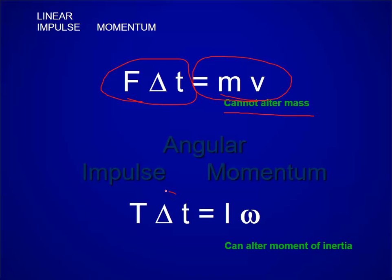In the angular world, impulse is torque times time, resulting in angular momentum, which is moment of inertia, times angular velocity. You can alter the moment of inertia, because it is mass times the radius squared. And that allows us to do some pretty impressive things in motion.